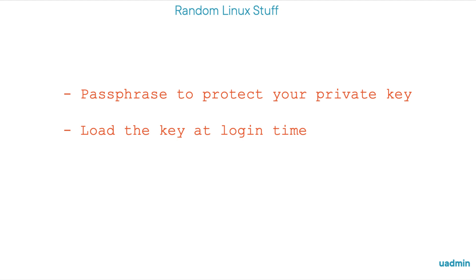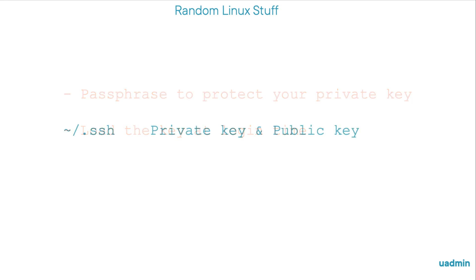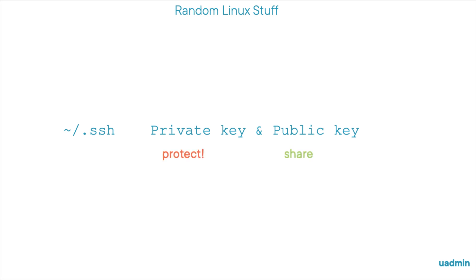As you probably know, whenever you want to connect to another system using public key authentication, you will need a key pair. When you create that key pair, by default, this will be stored in your own .ssh directory. This key pair consists of a private key and a public key. The private key should never be shared, whereas the public key's purpose is to be shared, so that it can be used to encrypt messages that only you can decrypt because you have the related private key.